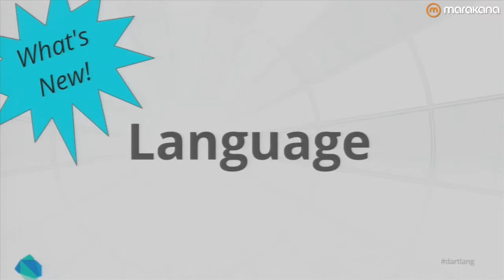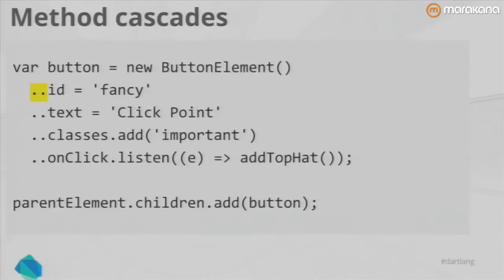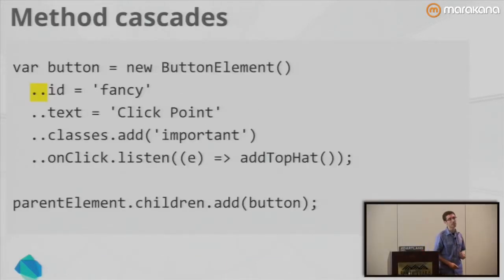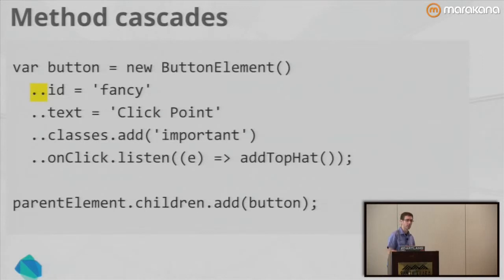A really common pattern in web programming is creating a new button, setting the ID, setting the text, setting classes, adding on-click handlers, adding it to a child — and the variable name 'button' is repeated six times. We can do better thanks to method cascades, which came to us from Smalltalk. It allows pretty much any API to become a fluent-style API, popularized by libraries like jQuery. With cascades, you eliminate the need to repeat 'button' over and over.